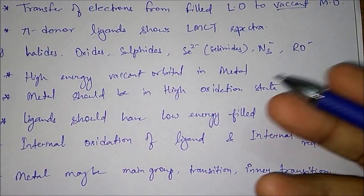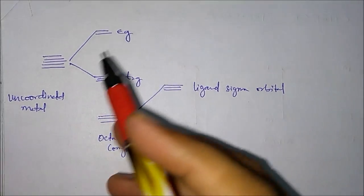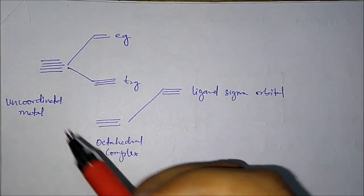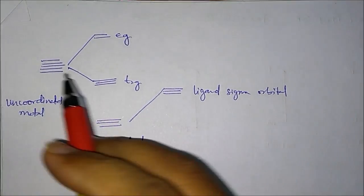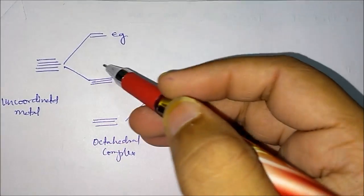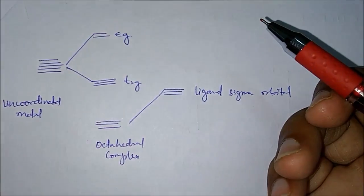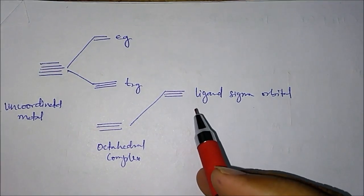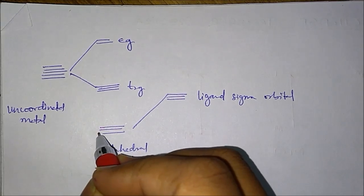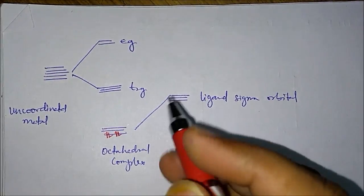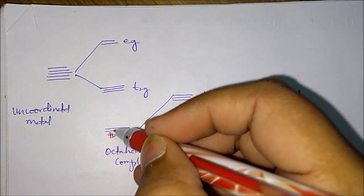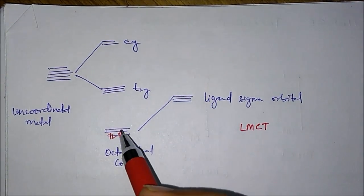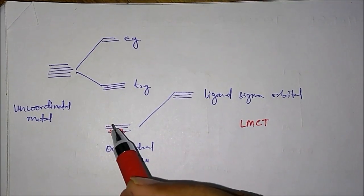Let's try to understand by considering this molecular orbital diagram - I am not drawing it in very detail, just trying to make you understand. This is the uncoordinated metal. When we form the octahedral complex, those orbitals will lose their degeneracy and split into two energy levels - EG on the upper side and T2G on the lower side. The ligand over here has a low-lying filled orbital, meaning electrons are already there in these orbitals. These orbitals should be low-lying so that the transition can happen from ligand to metal.